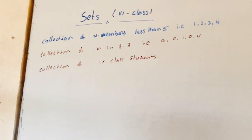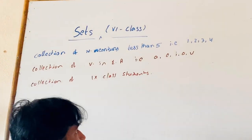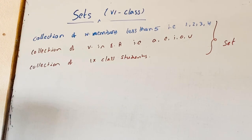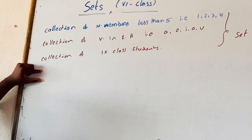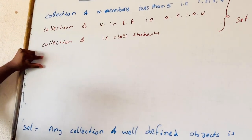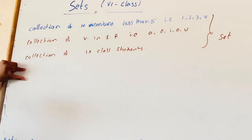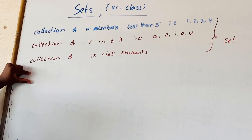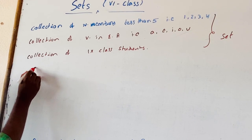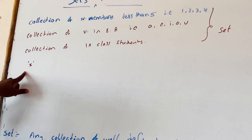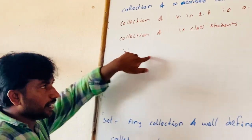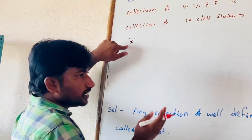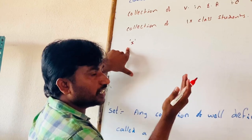Now look and observe these three examples. Every example here is called a set. However, the collection of intelligent students of 9th class — it is very difficult to define. Who is intelligent and who is not intelligent? For example, if you select a student X, X may be intelligent in the eyes of one teacher, and X may not be intelligent in the eyes of another teacher.